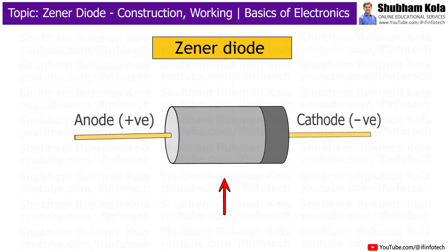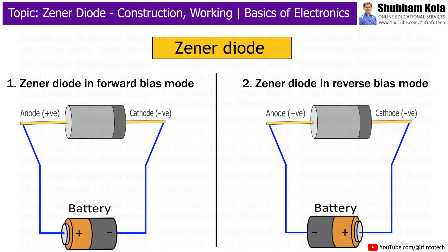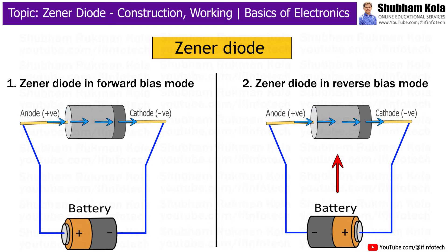But in the case of a Zener diode, it allows current to flow not only in the forward direction like a normal diode, but also in the reverse direction when a certain voltage is reached. This voltage is called the Zener voltage.